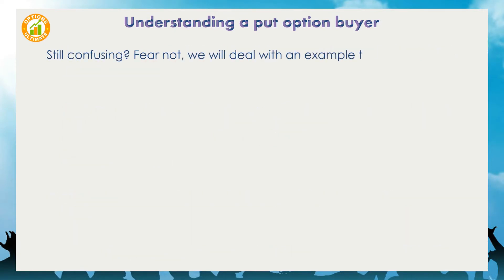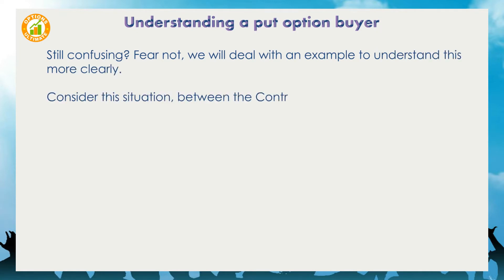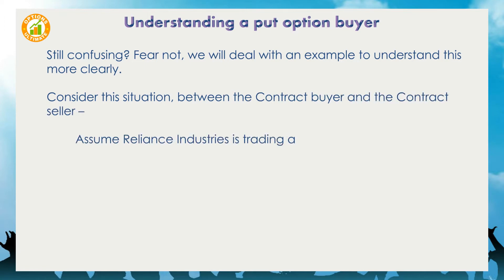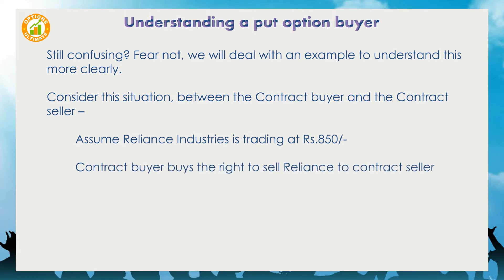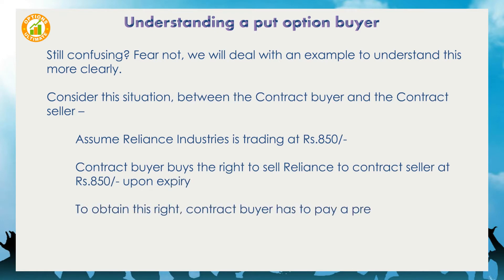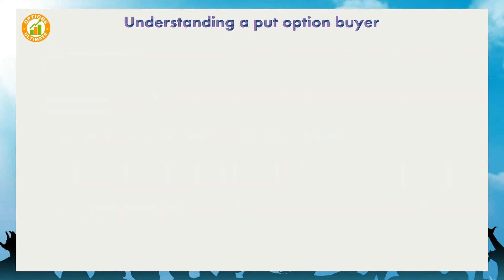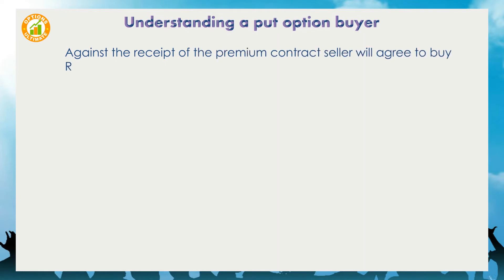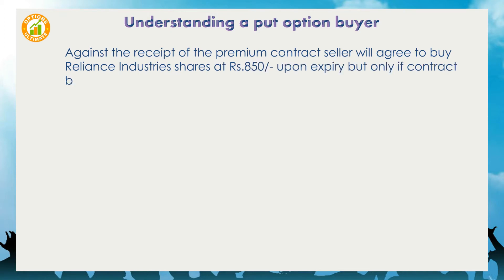We will deal with an example to understand this more clearly. Consider this situation between the contract buyer and the contract seller: assume Reliance Industries is trading at Rs.850. The contract buyer buys the right to sell Reliance to the contract seller at Rs.850 upon expiry. To obtain this right, the contract buyer has to pay a premium to the contract seller. Against receipt of the premium, the contract seller will agree to buy Reliance Industries shares at Rs.850 upon expiry, but only if the contract buyer wants him to buy it from him.